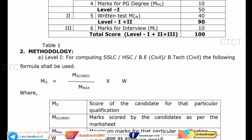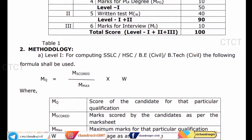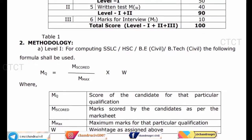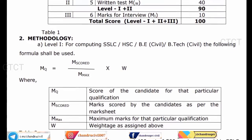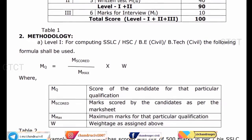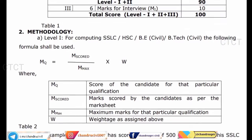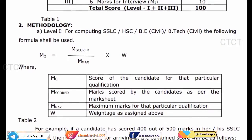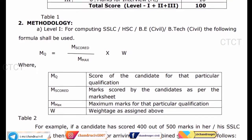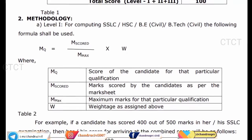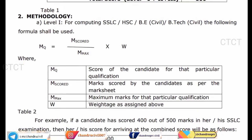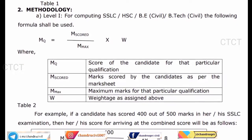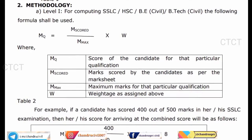Let's take a look at the score of the candidate from the particular group — this is the qualification. 10th or BTEC is the score. PG mark is the number of PGs. Q is the number of players. The weightage is used. M-Maximum — the maximum work is the qualification. Next is the weightage.